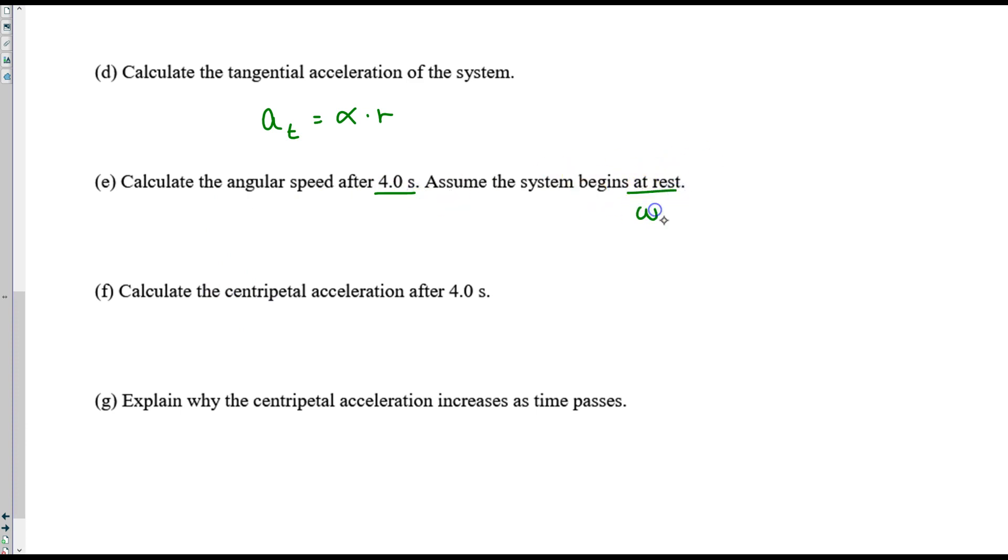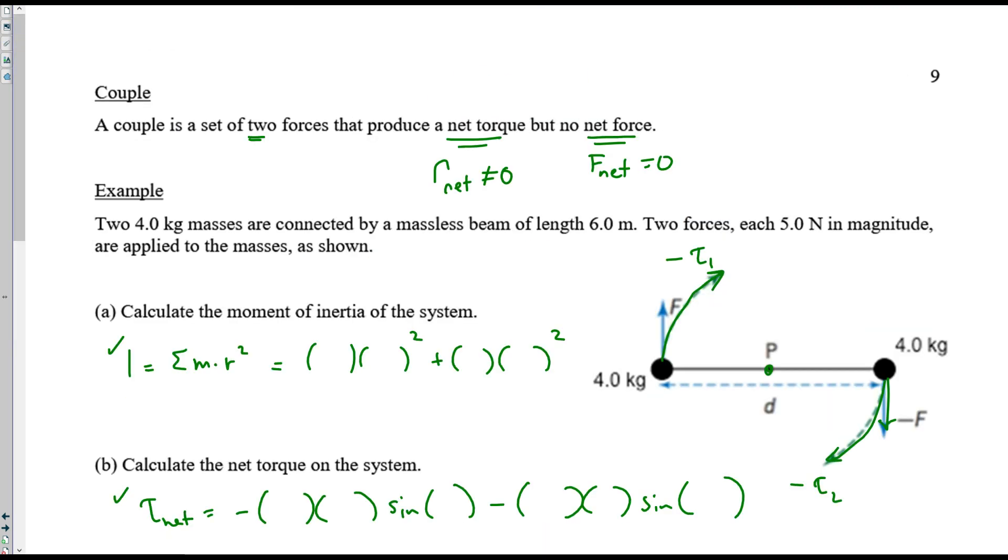Oh, don't forget the equations that take our angular quantities and turn them into rotational quantities. So here we're just using alpha times the radius. Calculate the angular speed after four seconds. Assume it begins at rest. That's the initial speed. This is time. You know this value, and you're looking for the angular speed after. That's the final angular speed. Find the centripetal acceleration, that's AC, after four seconds. So remember the equation omega squared r. You know this at the end of four seconds, so you can find this. Explain why the acceleration increases as time passes. So think about this centripetal acceleration. Think about this equation to answer that one, part g.